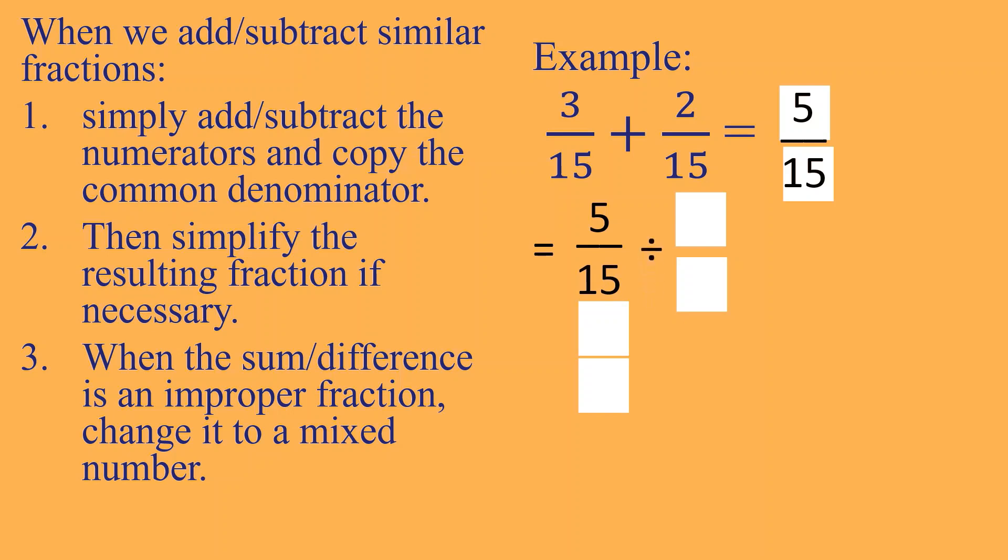How are we going to do that one? Natapos nyo lang yung grade 5 kayo, pati grade 4 yan. So, maybe review na lang ito. So, we have 5 over 15. Mag-iisip tayo ng pwedeng pang-divide sa 5 at saka 15. And that is what? That is 5. Yung walang remainder. Pwedeng i-divide sa kanila na walang remainder. That is 5. Didivide natin sa both numerator and denominator. So, 5 divided by 5 is equal to 1. And 15 divided by 5 is equal to 3. Meron pa bang pwedeng pang-divide sa 1 at saka 3? Wala na. So, our final answer is 1 third or 1 over 3.